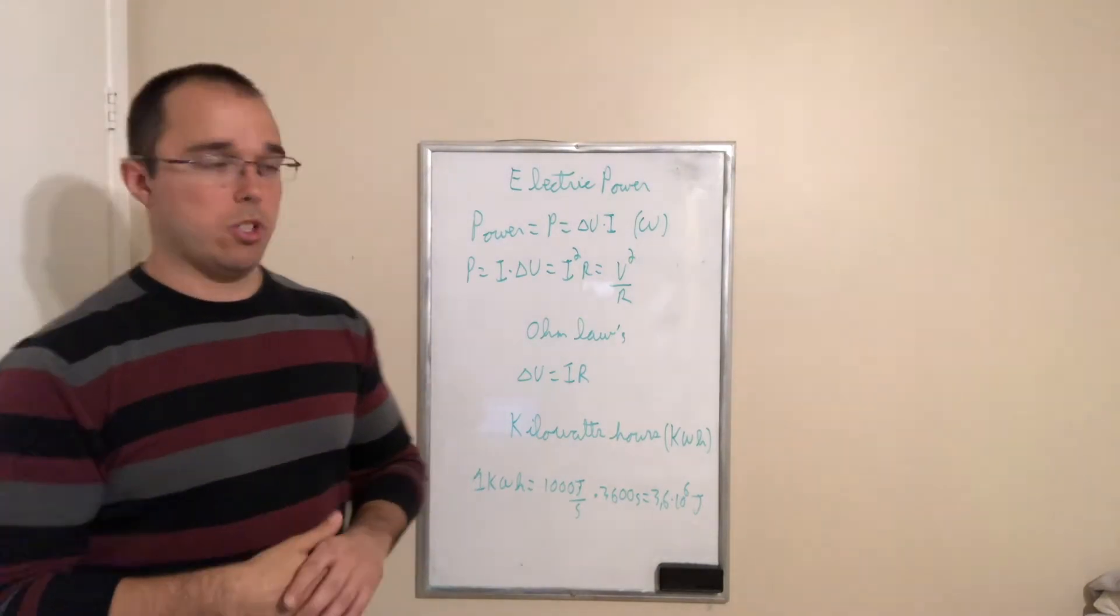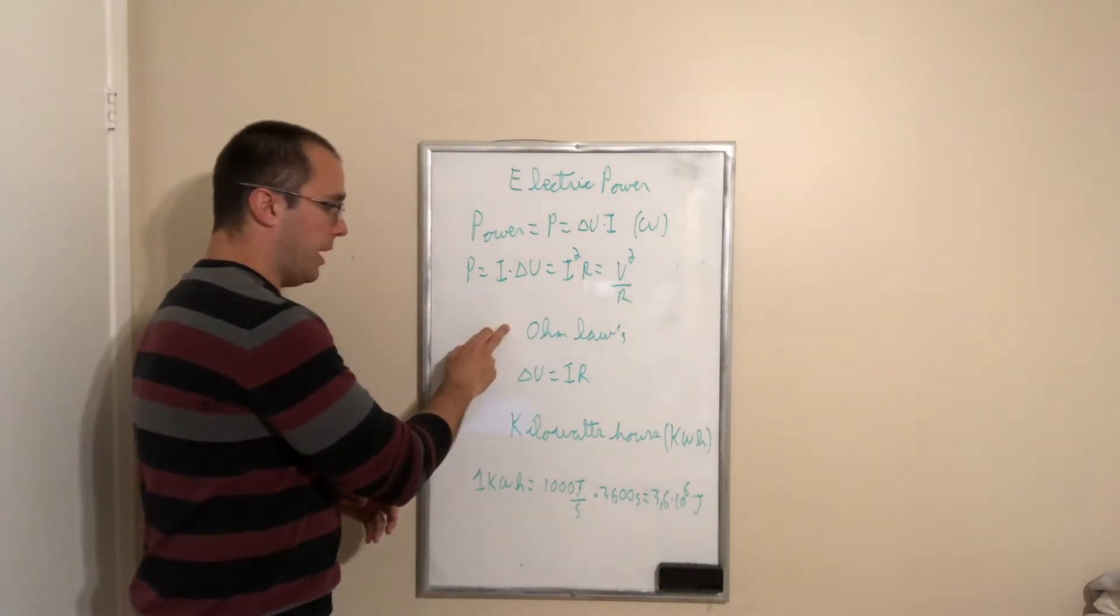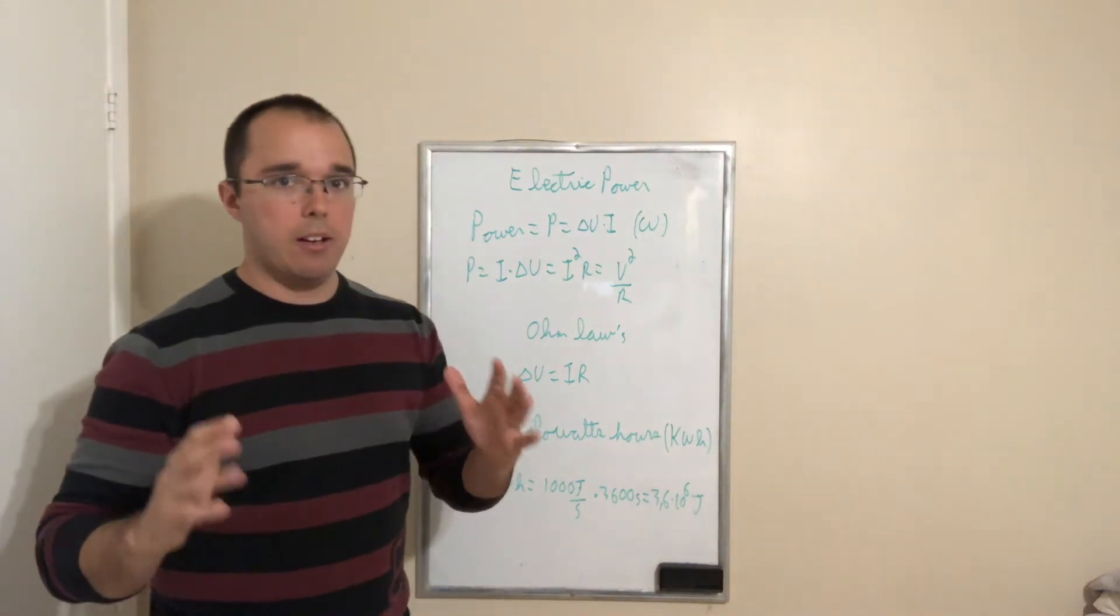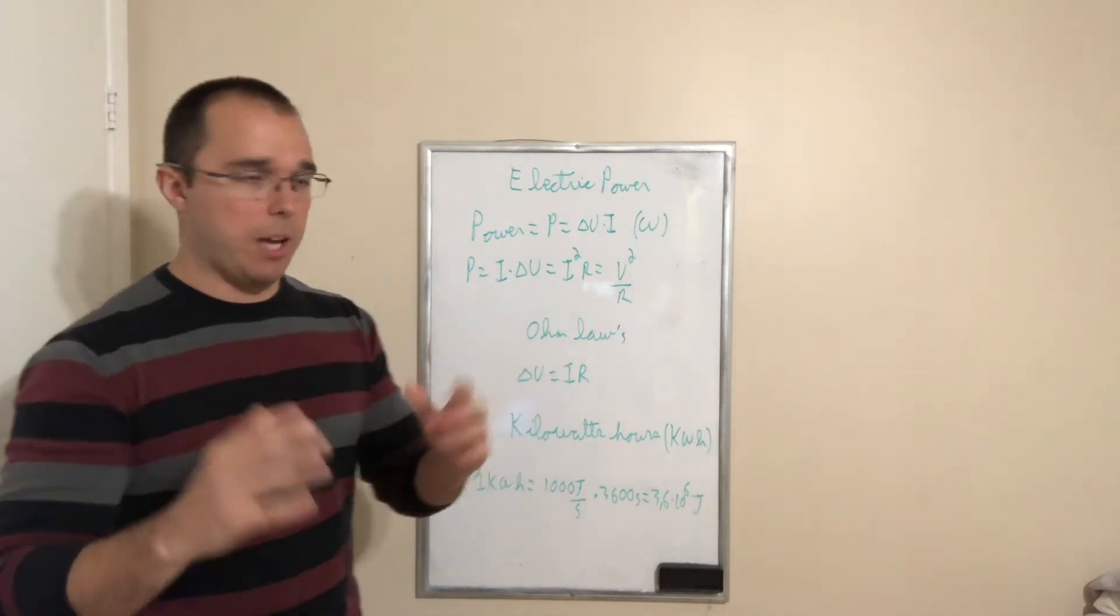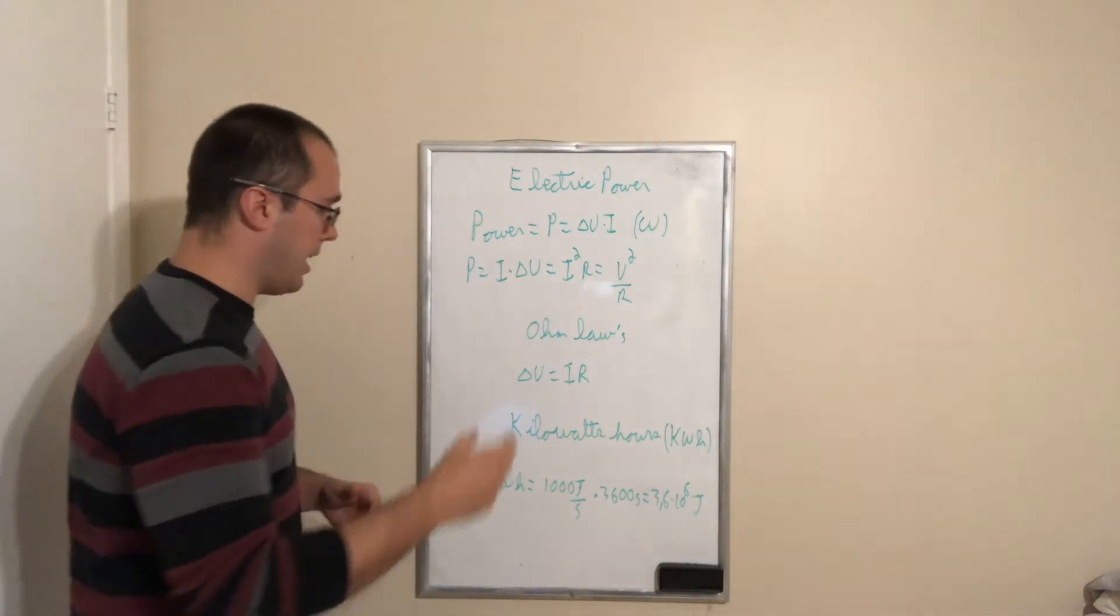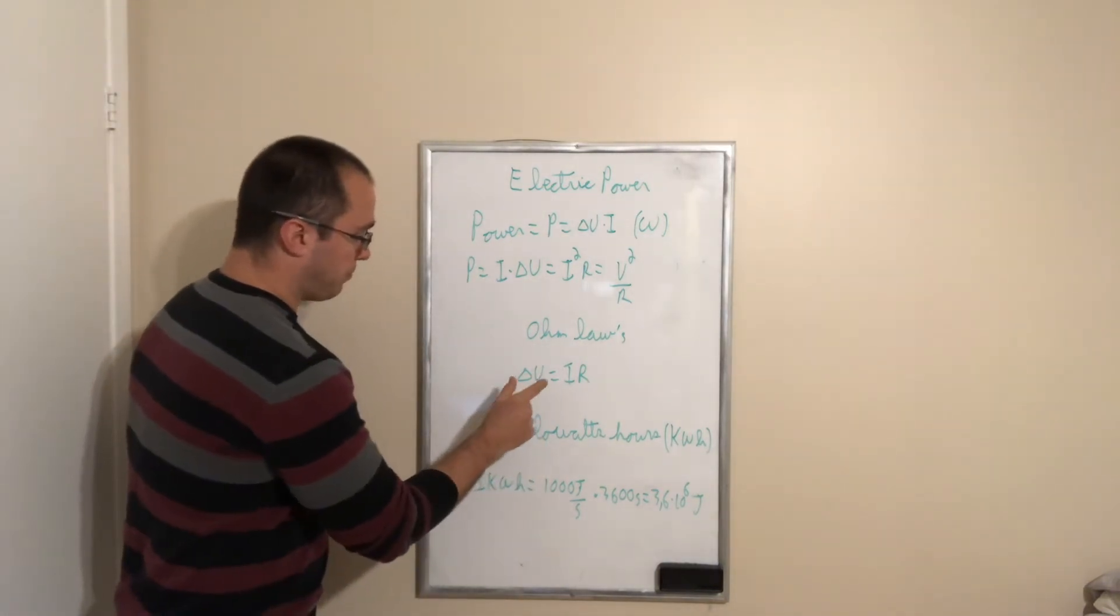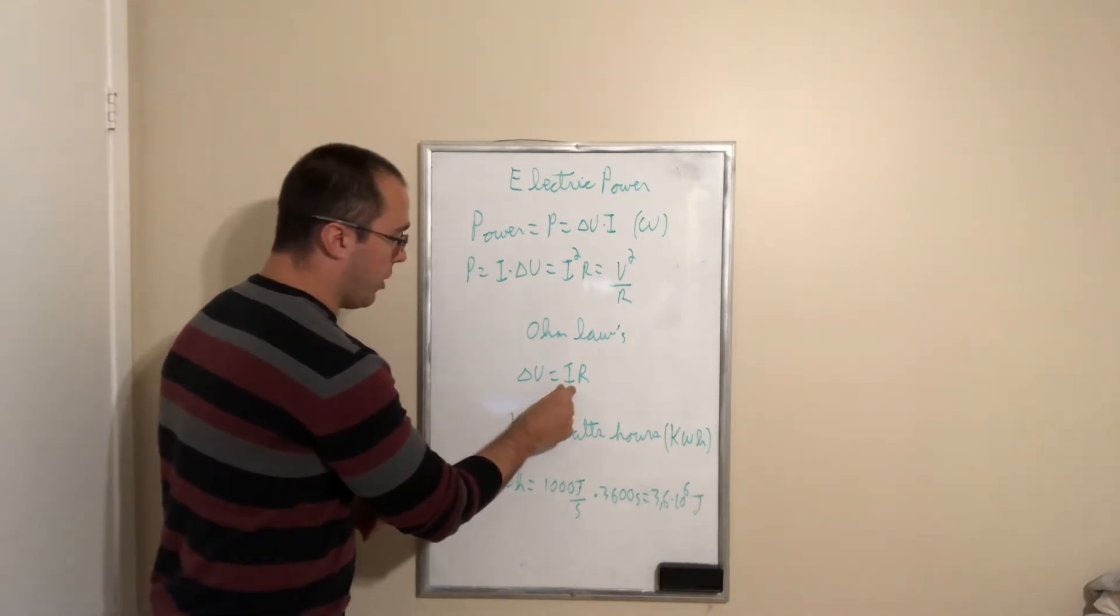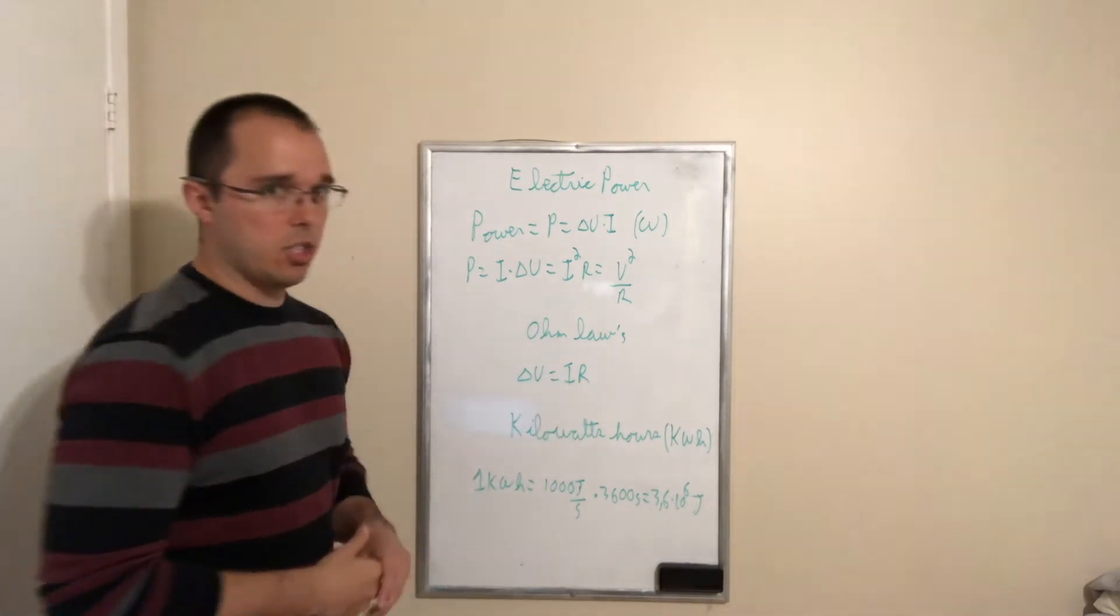All right, let's go to Ohm's law. So Ohm's law is a law that certain materials obey for a certain range of current and temperature. So basically it states that the drop in voltage is equal to the current multiplied by the resistance of an object.